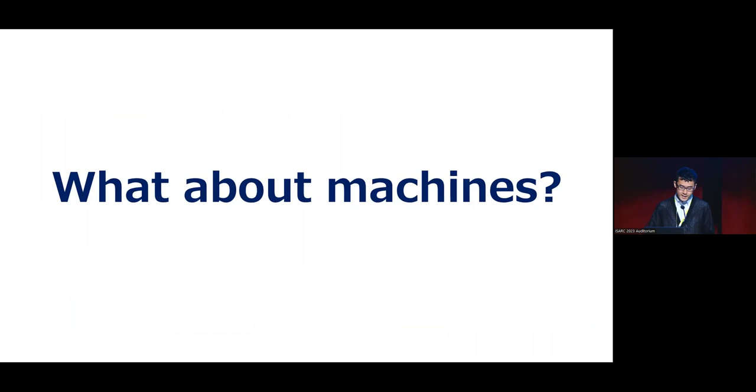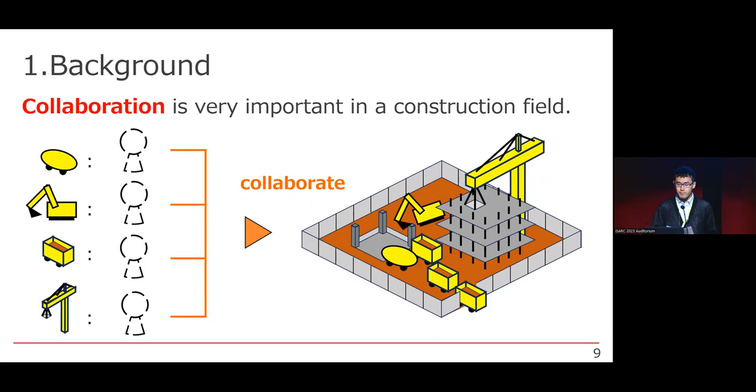Then, what about machines? What will happen if we replace human workers into machines? We insist that we can make the construction more efficiently by thinking of this collaboration effect among construction machines. As I have explained, the collaboration is very important to conduct a big construction task. This is the same when we replace human workers into machines.